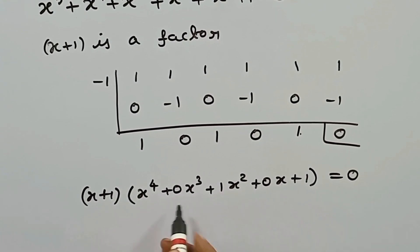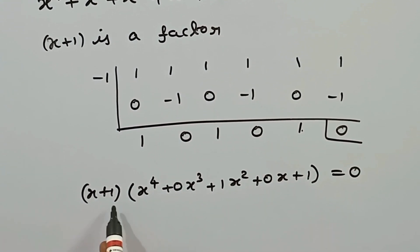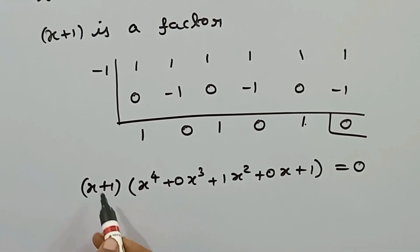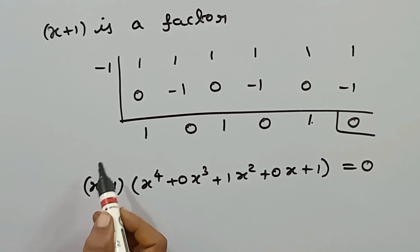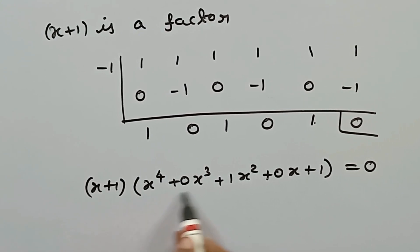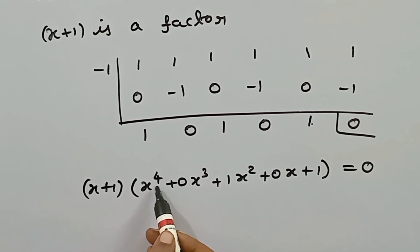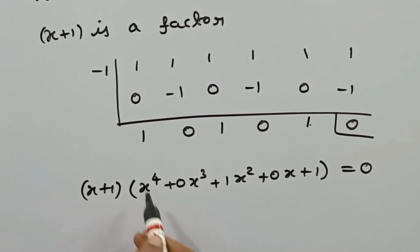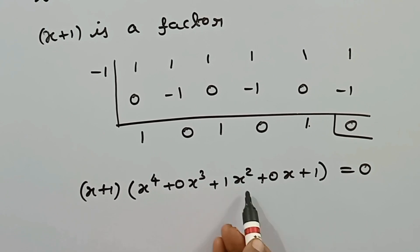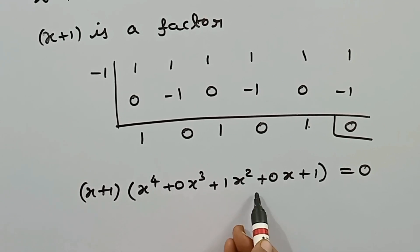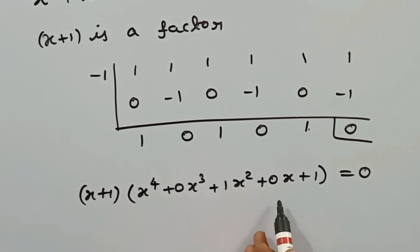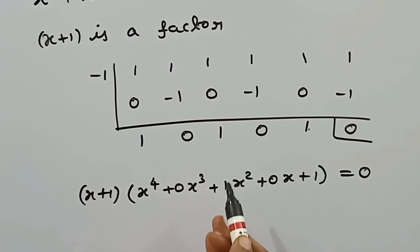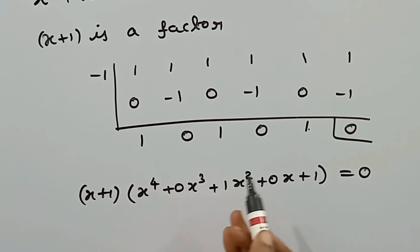After synthetic division, the remainder is 0, confirming x plus 1 is a factor. The given equation equals x plus 1 into the depressed polynomial: x power 4 plus 0 times x cubed plus 1 times x squared plus 0 times x plus 1. This is an even degree like sign reciprocal equation — the standard form.